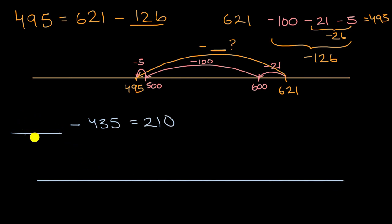So we're going to start at blank, take out 435, and then we're going to get to 210. So we're starting here. Maybe I'll put a question mark there so we know that point. We are subtracting 435. So that's minus 435. And we are getting to 210.